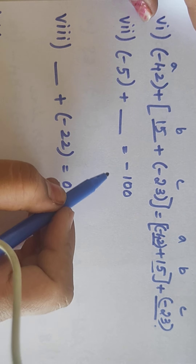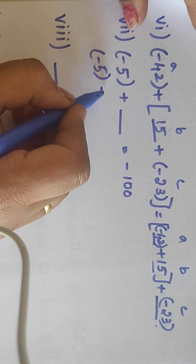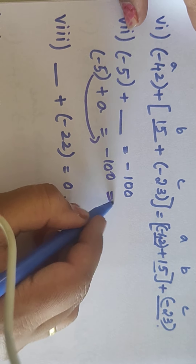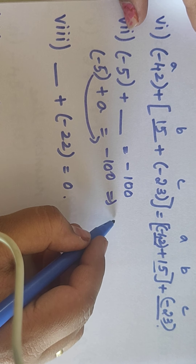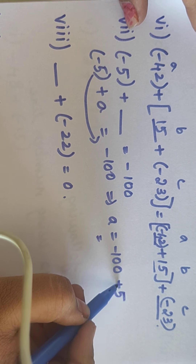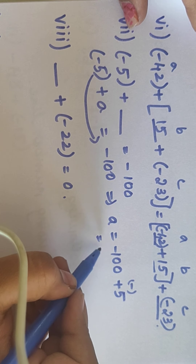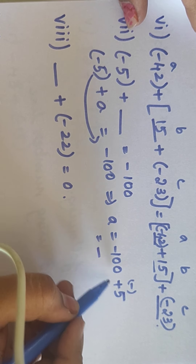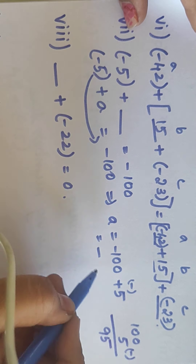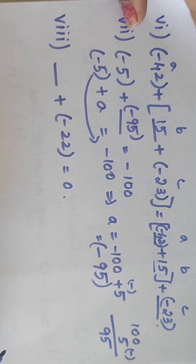Next: minus 5 dash minus 100. Give the dash a name A, so minus 5 plus A equals minus 100. When we change minus 5 to the other side, it turns to addition. So A equals minus 100 plus 5. Minus into plus is minus; compare the biggest value symbol — that is 100, so minus. 100 minus 5 equals 95. So the answer is minus 95.